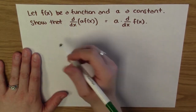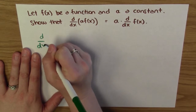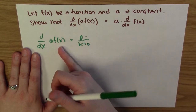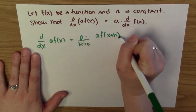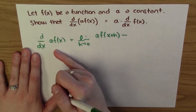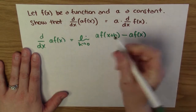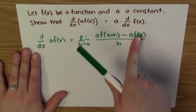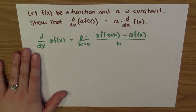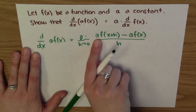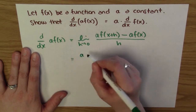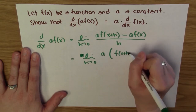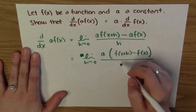The definition of the derivative here is: d/dx of a times f(x) is the limit as h goes to zero of — I plug in x+h everywhere I have an x — so I have a times f(x+h), I subtract a times f(x), and then I divide by h. I notice that I have an a in this term and an a in that term, so I can just factor it out. So this is the limit as h approaches zero of a times f(x+h) minus f(x), all over h.